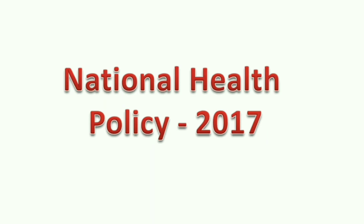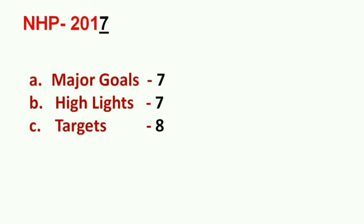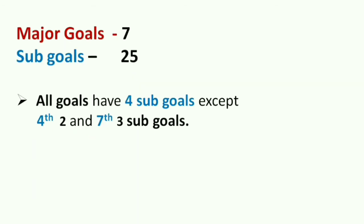The next topic is the present National Health Policy, that is NHP 2017. The important areas are: one — major goals (seven goals); two — highlights (seven highlights); three — targets (eight targets). The clue is that NHP 2017 ends in 'seven,' so major goals are seven, highlights are seven, and targets are eight (1+7=8).